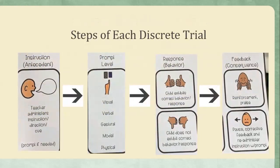Here we have a visual for those to better understand the steps of each discrete trial. The instructor will begin with the SD, or the instruction, along with a prompt if it is needed. Provide a prompt which may be a visual, verbal, gesture, model, or physical prompt. Wait for a response and provide a consequence or feedback for correct and incorrect responses.